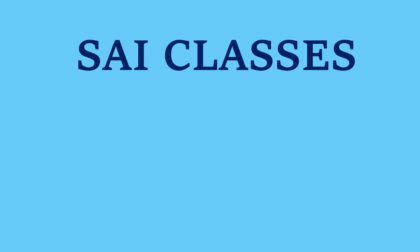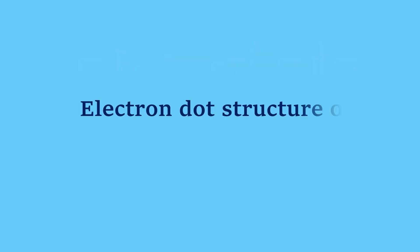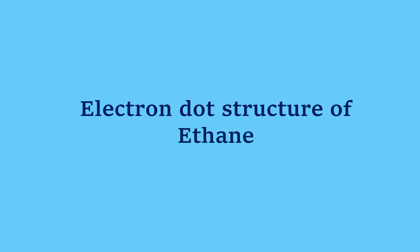Welcome to Science Classes. Today we are going to learn a new topic: electron dot structure. In this series, we will discuss electron dot structures of different compounds. Today we are having the electron dot structure of ethane. So let's start.